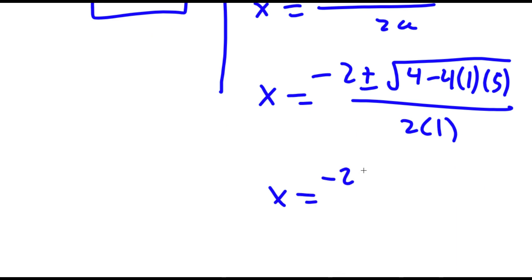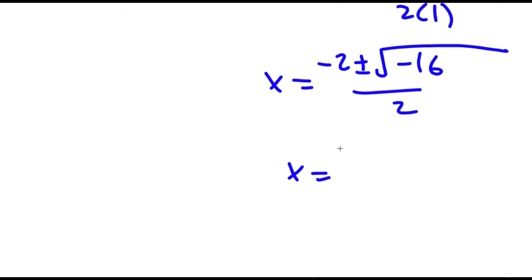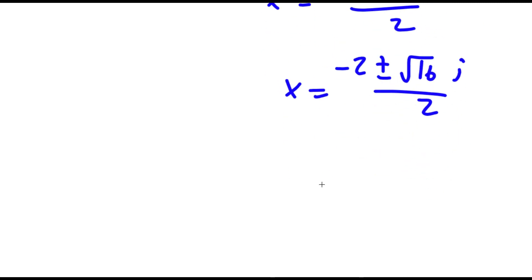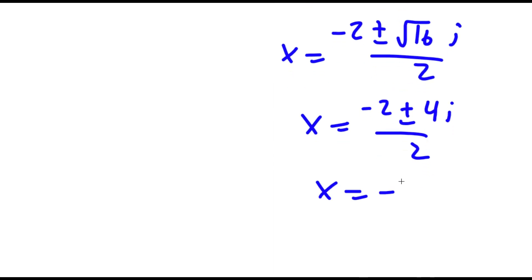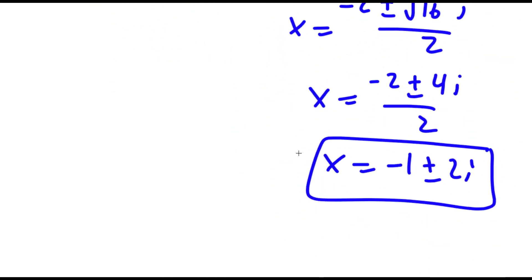This is equal to negative 2 plus or minus the square root of 4 minus 20, which is negative 16, over 2, which is negative 2 plus or minus 4i over 2, which simplifies to negative 1 plus or minus 2i. So these are my three solutions to this problem.